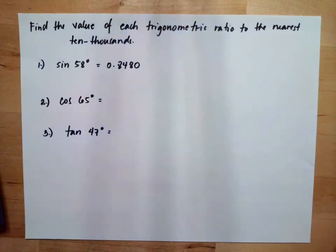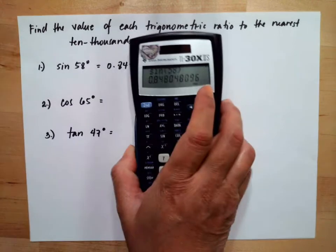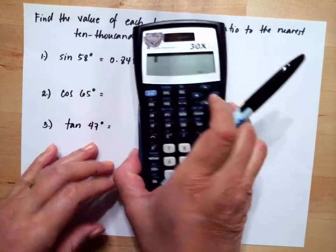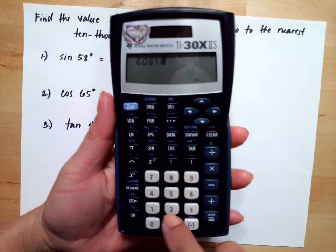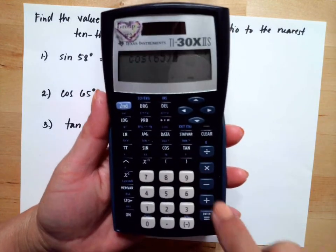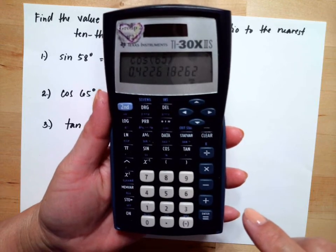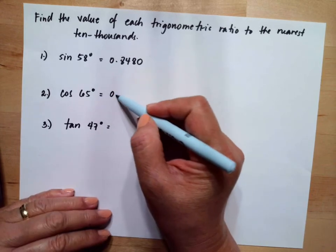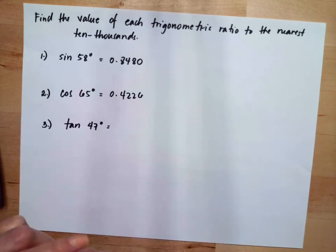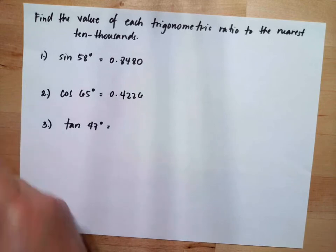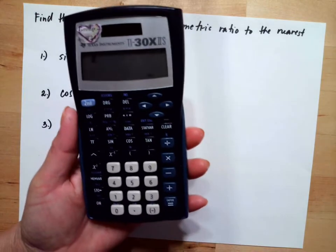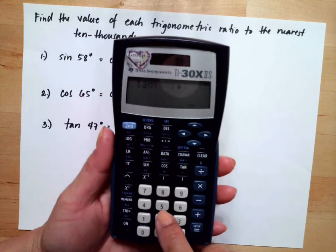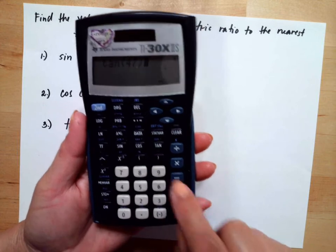Then you will do the cosine. Cosine 65 degrees, and the answer is 0.4226. Then you will do your tangent of 47 degrees.